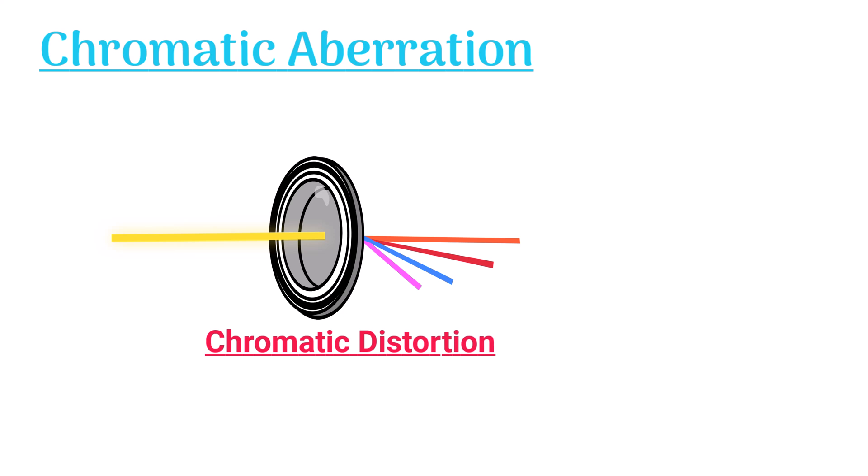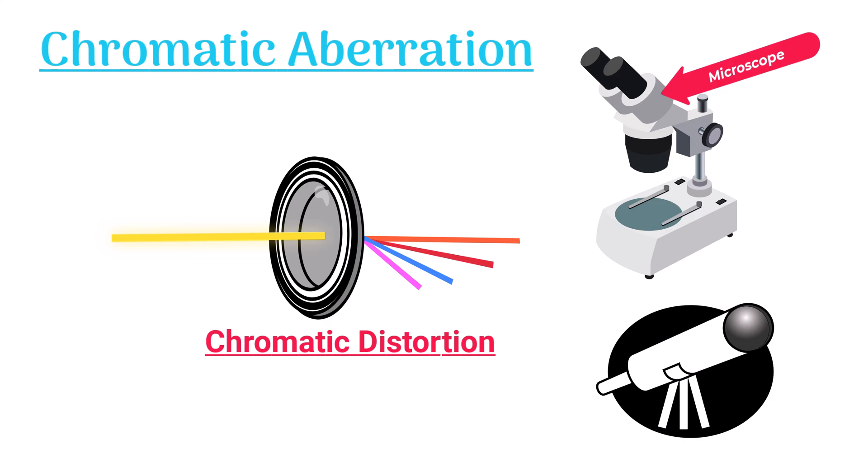Chromatic aberration, also called chromatic distortion, is a weird glitch commonly seen in microscopes and telescopes.